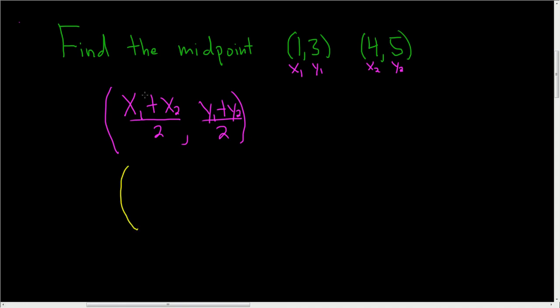So x1 is 1, so we get 1 plus, and then x2 is 4, so 1 plus 4, and then we divide by 2. Basically, we just add the x's and divide by 2. So 1 plus 4 divided by 2.